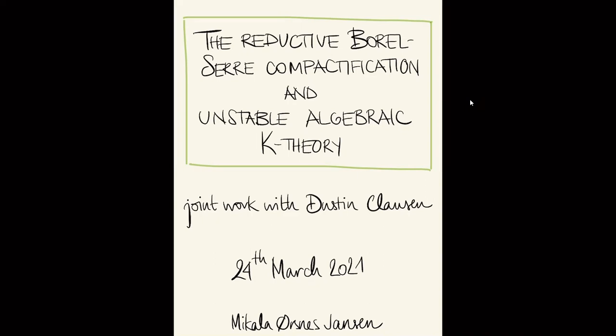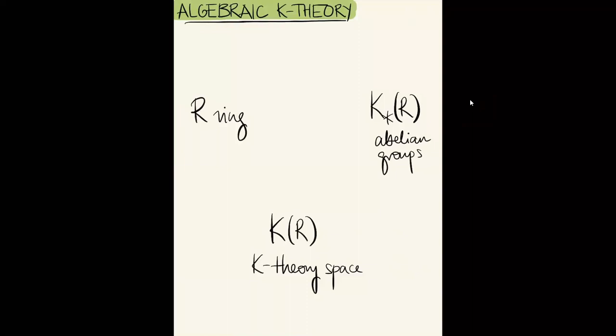I'll begin with this first slide just to make sure we're on the same page. The main motivation behind this whole project is an interest in Algebraic K-Theory. Given a ring R, we associate to it a sequence of abelian groups — the K-groups — by associating to R a K-Theory space K(R) and then taking the homotopy groups.